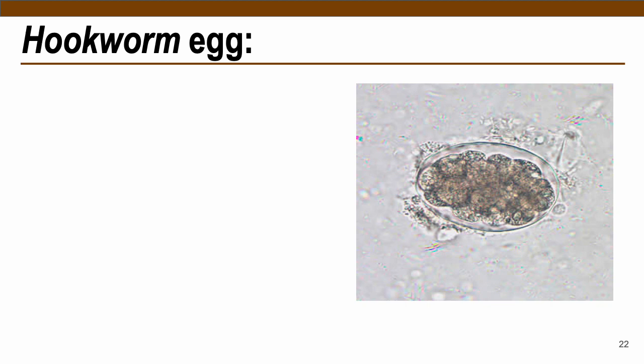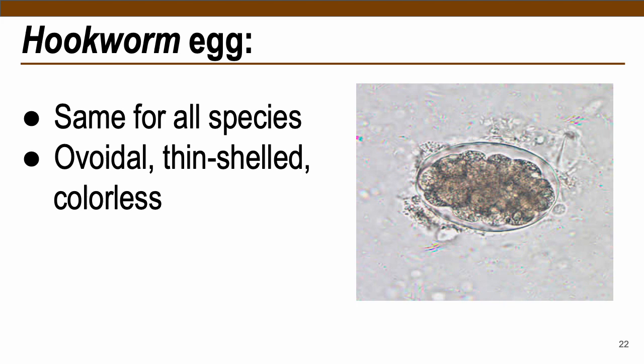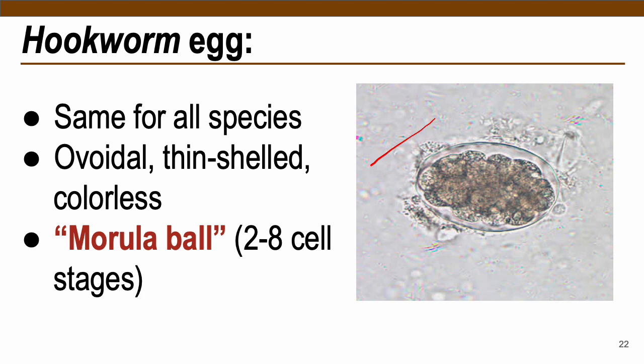Hookworm eggs are similar across species: ovoidal with a thin colorless shell, described as morula because they contain at least two to eight cell stages — resembling a grape-like or morula appearance.